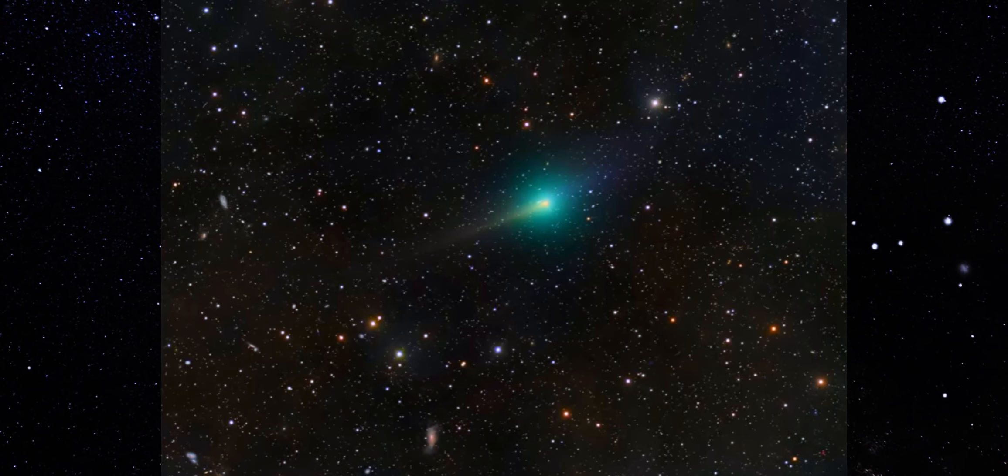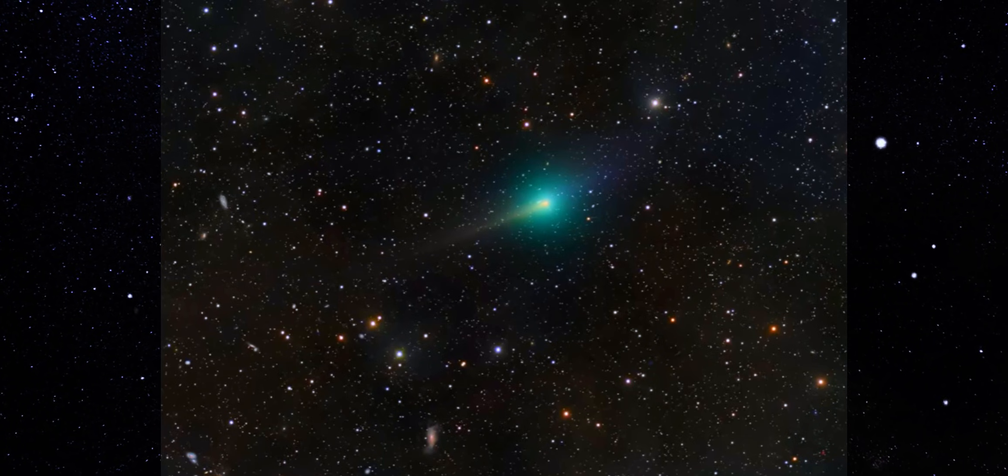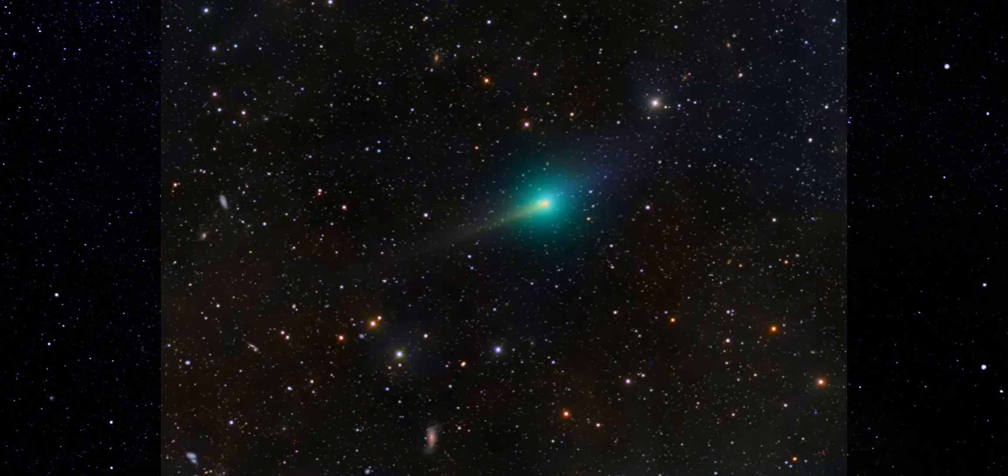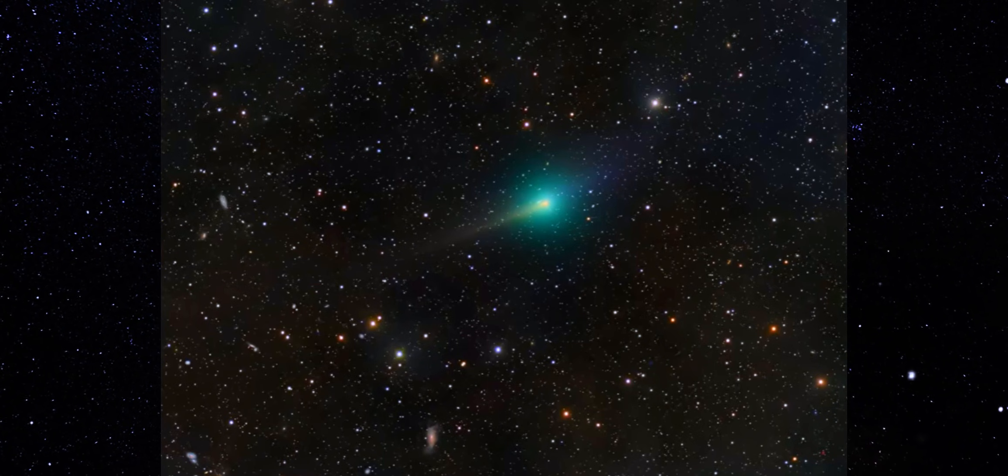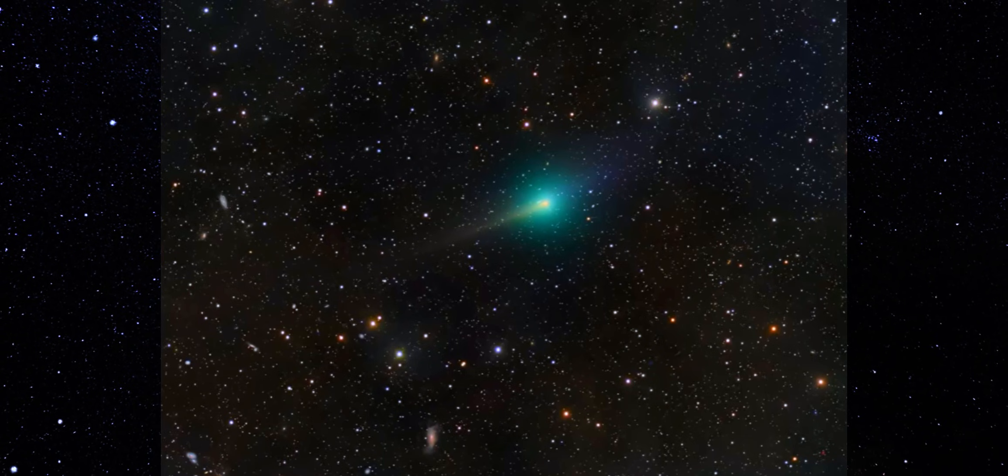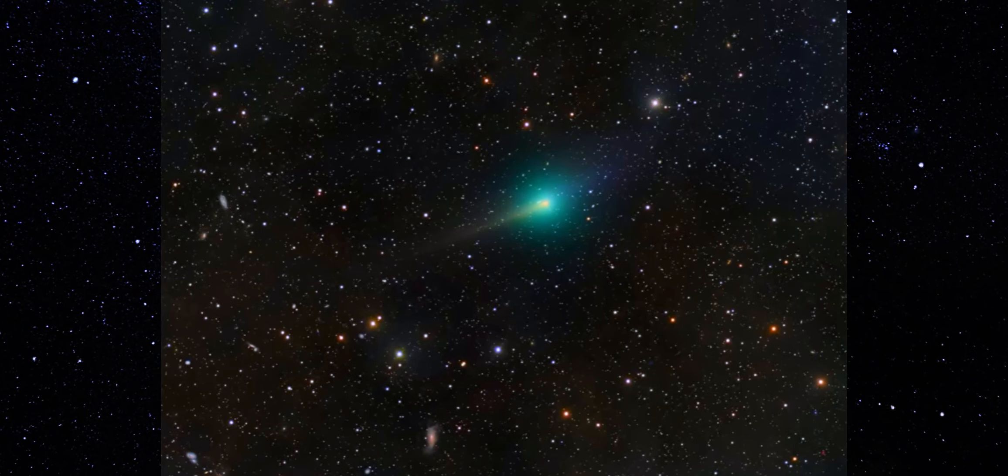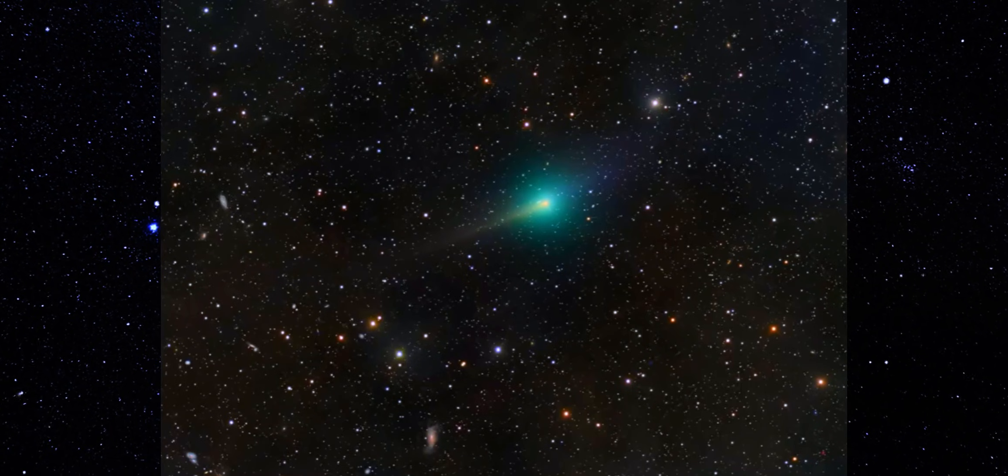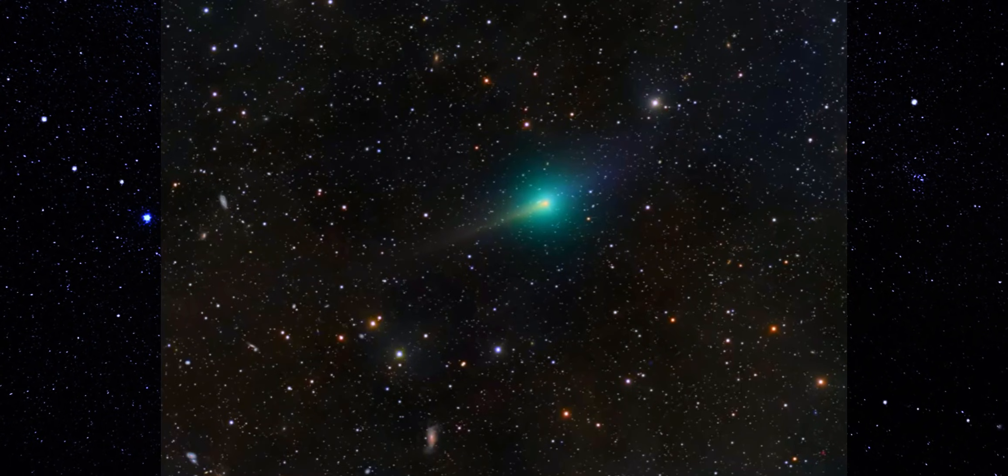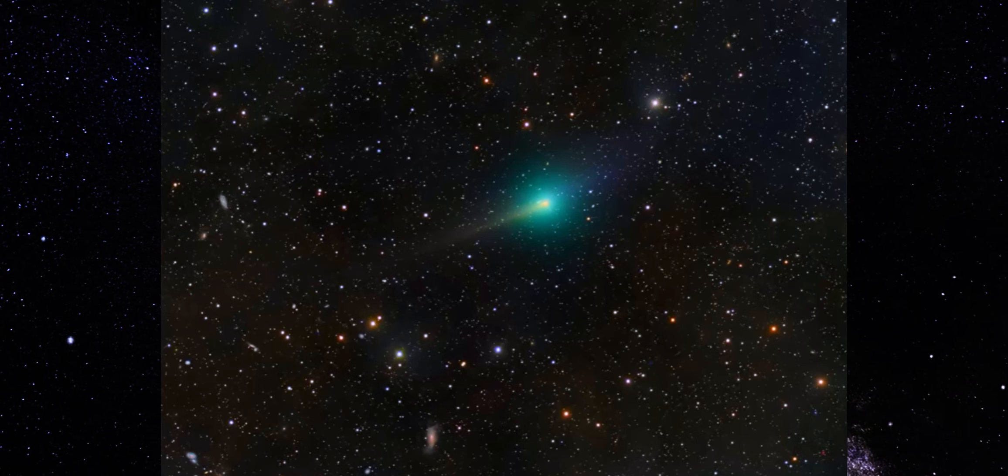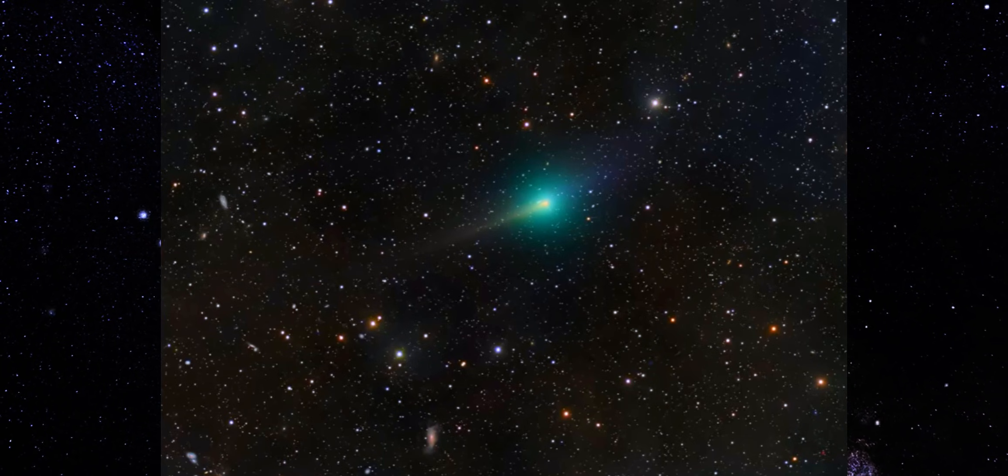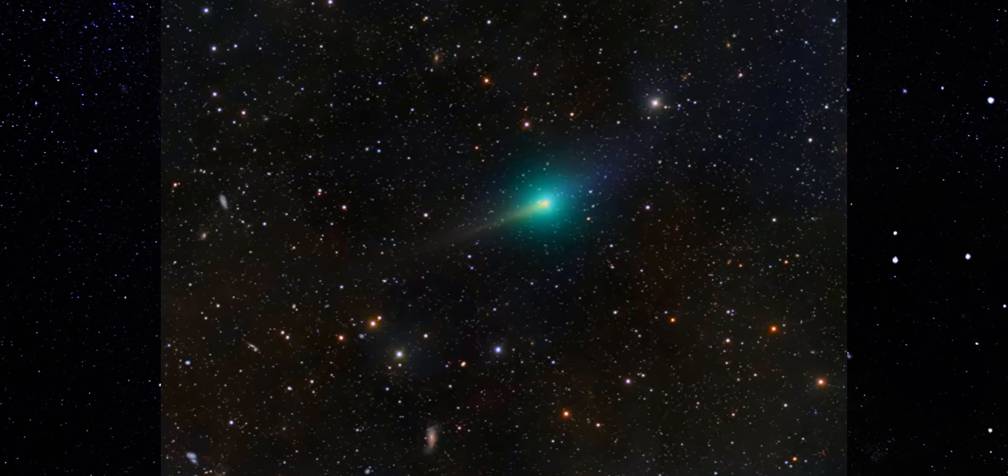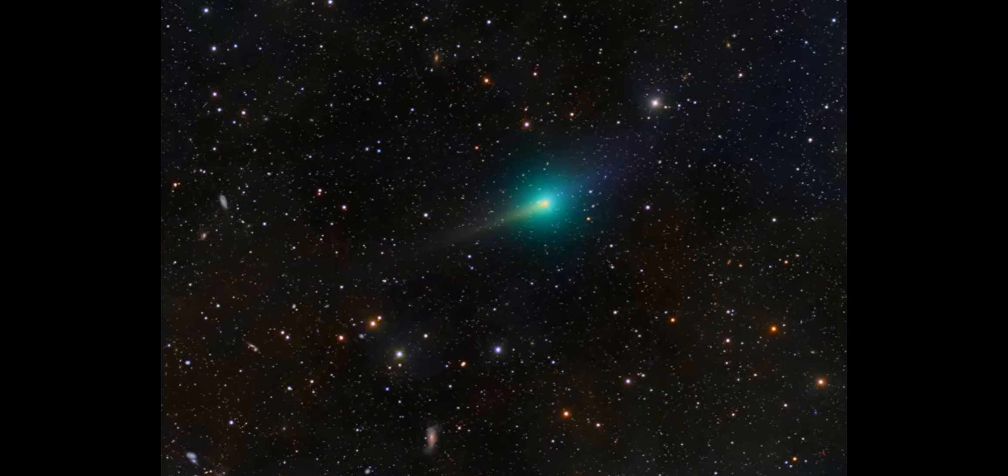So here's the real question to sit with. If this jet is visible before heavy processing, holds its shape across time, and stays aligned across multiple observers and wavelengths, what exactly is driving it? Is this just an unusually active nucleus operating at the extreme edge of comet physics? Or are we watching a process we don't fully understand yet? Let me know what you think in the comments. I read all of them. And if you want to keep tracking 3i Atlas as new data drops, hit like, subscribe, and share this with someone following.